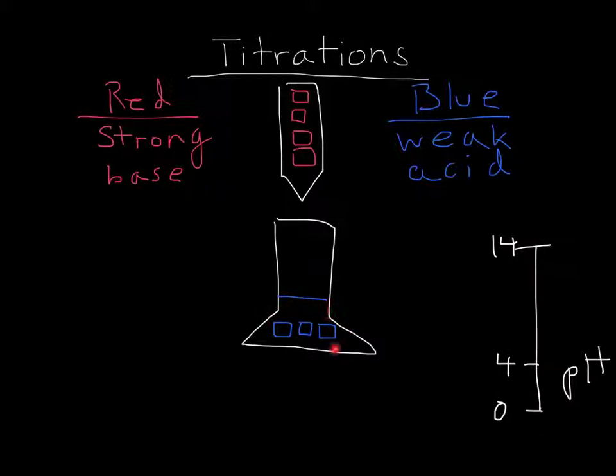Because right now, there's nothing in the solution except weak acid. So it's going to be 4. So if I dropped a red Lego, if I dropped a base, it would combine with this acid and it would reduce the amount of acid, right? So if it reduces the amount of acid, then the pH is going to go up, because the pH goes down as you add acid. So if you decrease acid, it's going to go up, because the red Lego just combined with that acid.